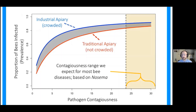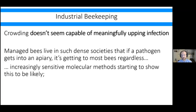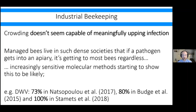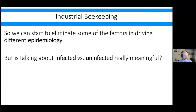Really, for most honeybee pathogens, crowding isn't very capable of upping infection rates. Managed bees live in such dense societies that if a pathogen gets into a system, every bee is going to be exposed to it regardless of beekeeper intervention. This has been confirmed by molecular methods, looking at viruses which are extremely prevalent. And so that allows us to move on to other parts of epidemiology.